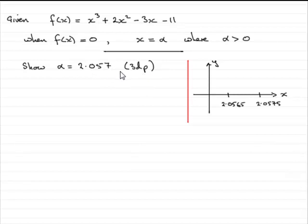And briefly, just to show you how this is done, what we do is we take the lower bound of this number, which is 2.0565, and we take the upper bound, which is 2.0575.